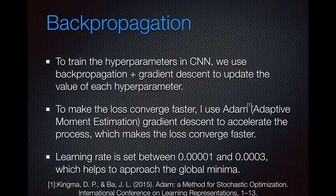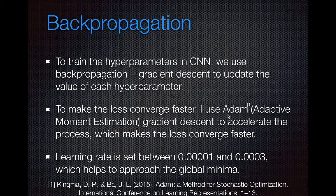In the backpropagation part, to train the CNN hyperparameters, we use backpropagation gradient descent to update the value of each hyperparameter. To make the loss converge faster, I use Adam — adaptive momentum estimation gradient descent — to accelerate the process. Adam is a kind of awesome gradient descent method; for more details you can find it in the paper. The learning rate is set between 0.00001 and 0.0003, which helps to approach the global minima. I did lots of experiments on learning rate and found that this range gives a better result.